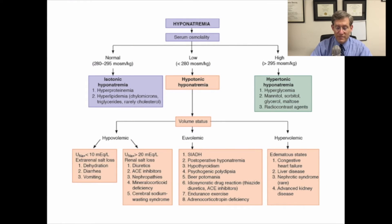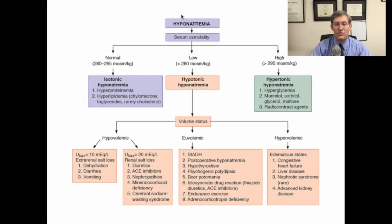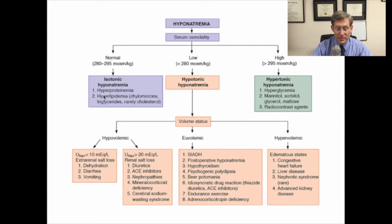In this slide, you'll see an overall structured approach to a patient with hyponatremia. The first thing you need to do is check their serum osmolality — the easiest way to think about it is as a measure of how concentrated the serum is. Most patients will have a low serum osmolality, less than 280, and that is true hypotonic hyponatremia. Patients can also have a normal serum osmolality, which we describe as isotonic hyponatremia, with etiologies including hyperproteinemia and hyperlipidemia syndromes.